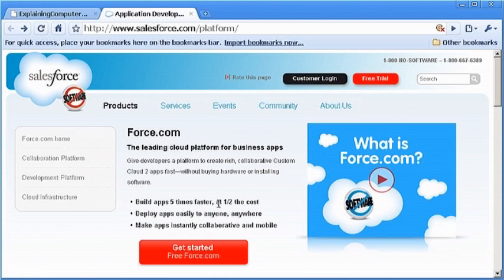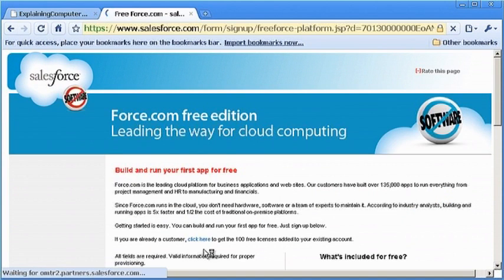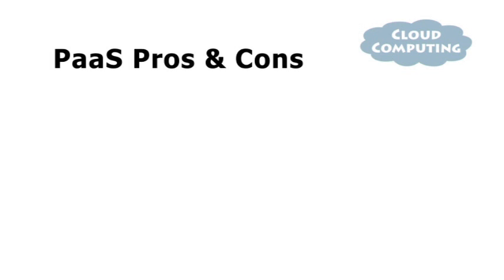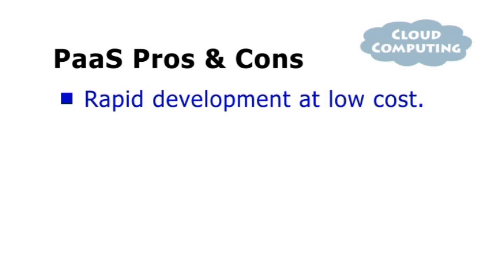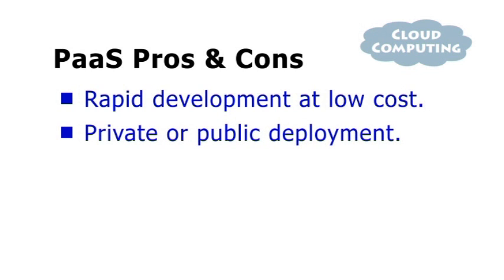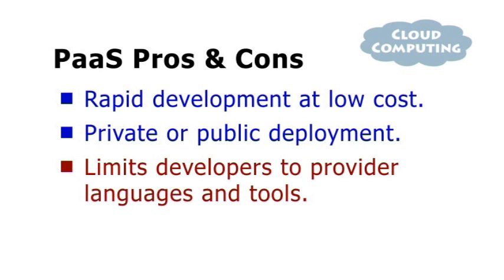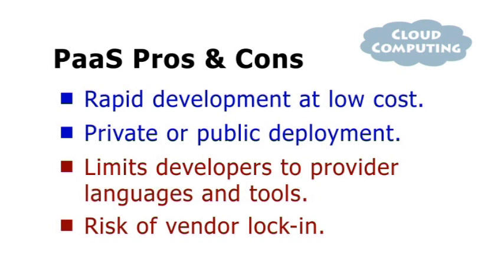Both Google App Engine and Force.com also currently allow one application to be built and hosted for free. All PaaS offerings allow users to create new online applications very rapidly at low cost. Such applications may also be used privately within just one business, or made available publicly. This said, adopting PaaS is restrictive technically, as it limits developers to the programming languages and other tools that their PaaS provider has on offer. There is also the risk of vendor lock-in, as applications built on one provider's platform cannot be moved to another.